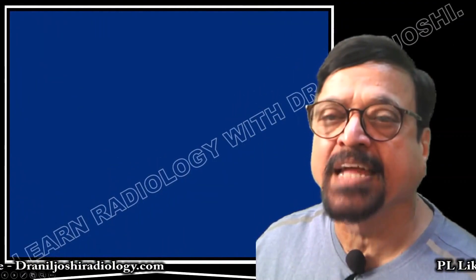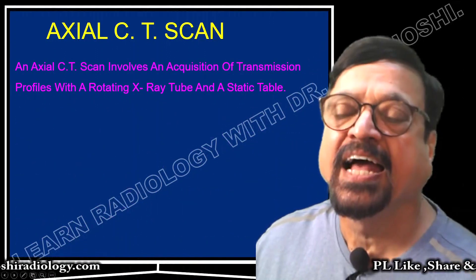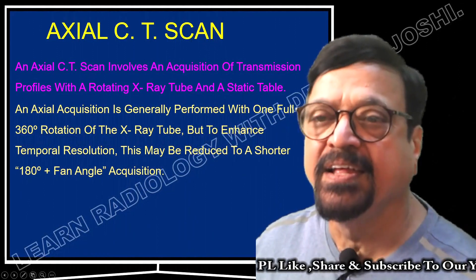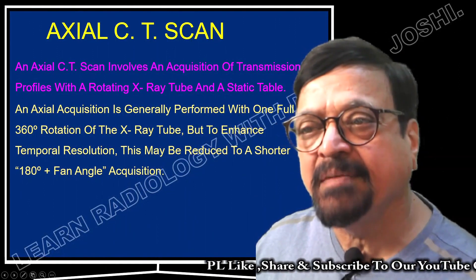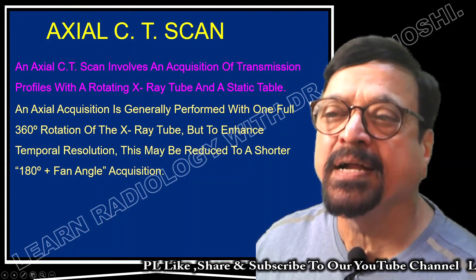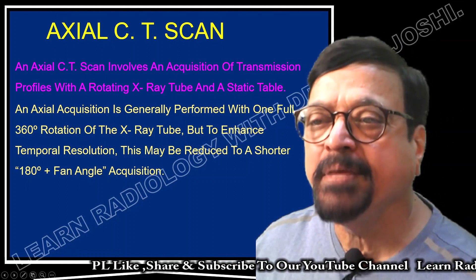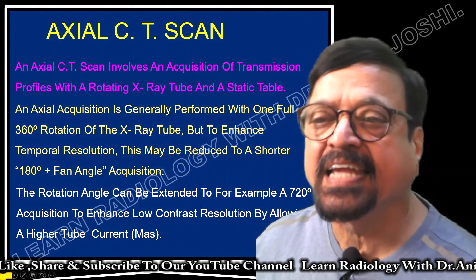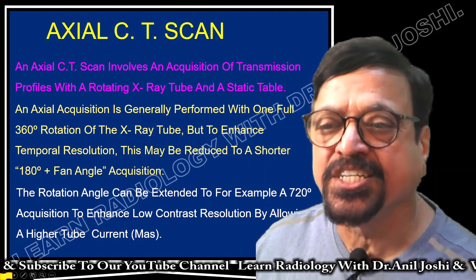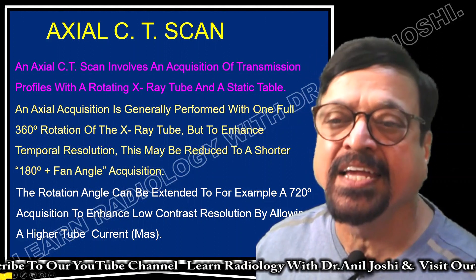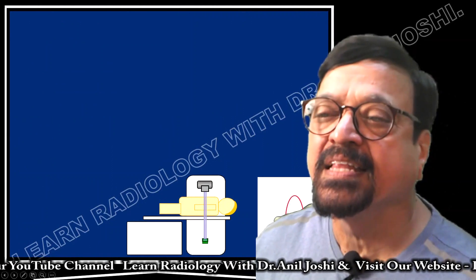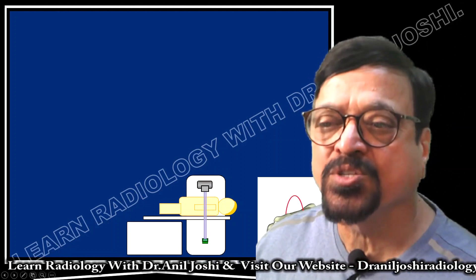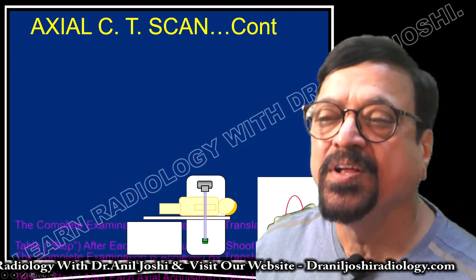Now let's look at the details of axial CT scanning. The axial CT scan was the earlier technique and involves acquisition of a translational profile with a rotating X-ray tube and a static table. Axial acquisition is generally performed with one full 360-degree rotation of the X-ray tube. With enhanced temporal resolution, this may be reduced to shorter than 180 plus degrees due to fan-shape acquisition. The rotational angle can be extended to 720 degrees to enhance low contrast resolution by allowing a higher tube current. The table moves 10 mm per section and stops after each rotation — so it was taking more time, which was a major disadvantage.